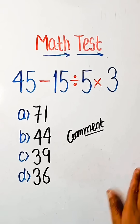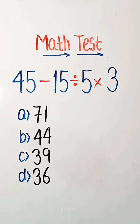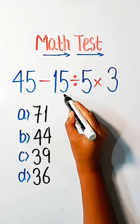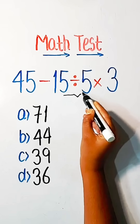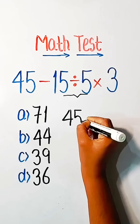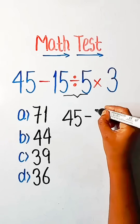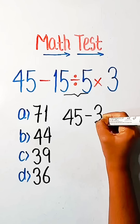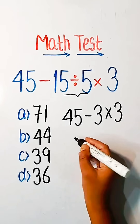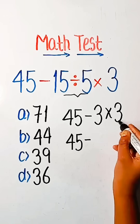Now it's time to solve the problem. According to BODMAS, division comes first. So we can write: 45 minus 15 divided by 5 is equal to 3, multiplied by 3. So 45 minus 3 threes are 9.